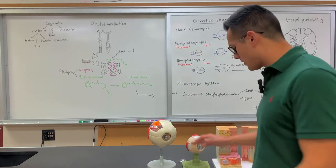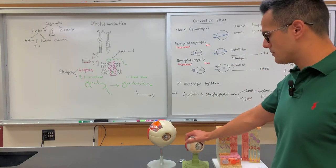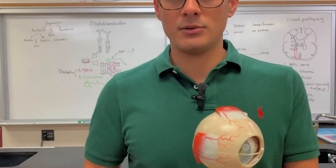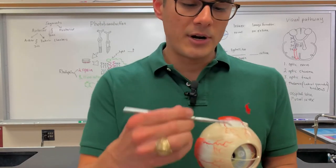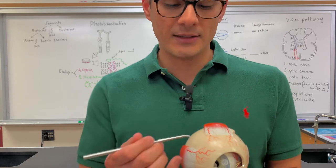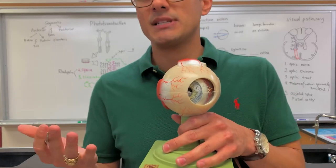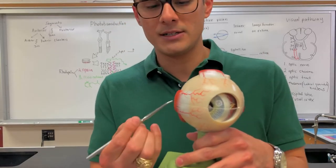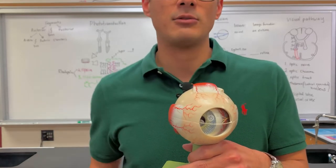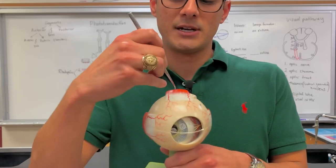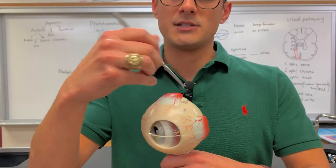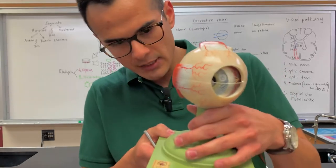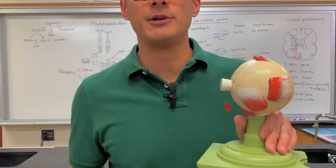I have two different eye models here, and I'm going to start with the small eye model first because there are different features between the large and the smaller one. The outer part of the eye is known as the sclera, and this serves as an attachment site for the muscles. Some of the different muscles include superior rectus, inferior rectus, medial rectus, and lateral rectus. Number five here is the superior oblique tendon, which is another one of the eye muscles. And then here on the bottom is the inferior oblique.